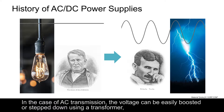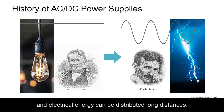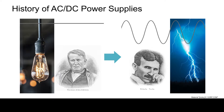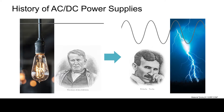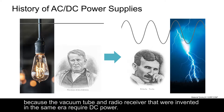In the case of AC transmission, the voltage can be easily boosted or stepped down using a transformer, and electrical energy can be distributed long distances. A device to convert alternating current to direct current became necessary, because the vacuum tube and radio receiver that were invented in the same era required DC power.